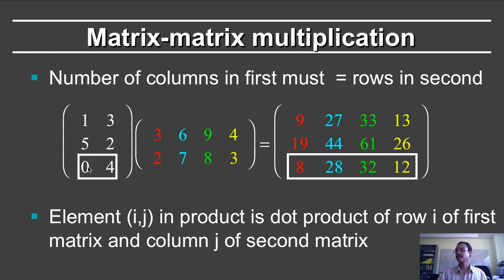And the final example here, the first one is 0, so we don't even need to consider it. 4 times 2 is 8, 4 times 7 is 28, 4 times 8 is 32, 4 times 3 is 12. And this is the way matrix multiplication works.